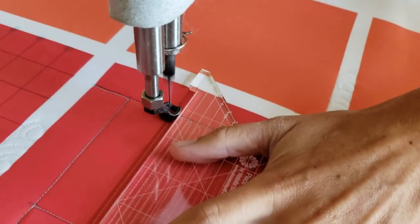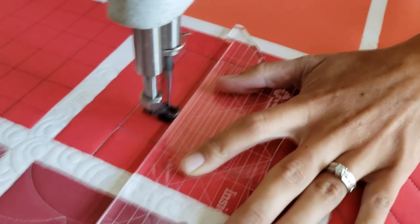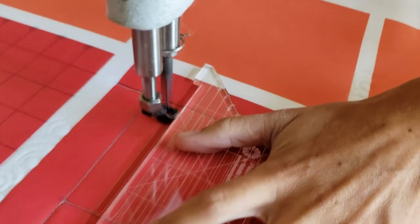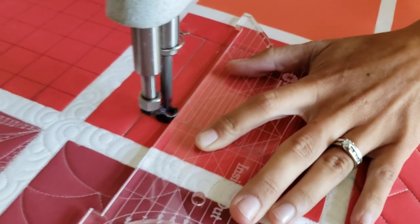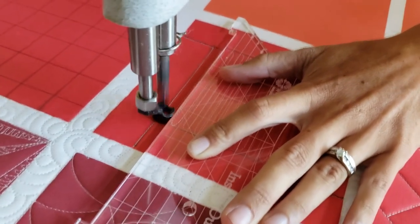Some type of fussy cut design, but for this one, because we're working with machine quilting rulers, I thought it would be fun just to do some simple straight line matchstick quilting. I'll stitch that all the way across that center portion of the block.